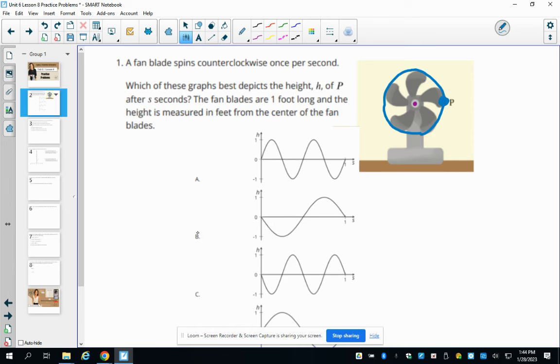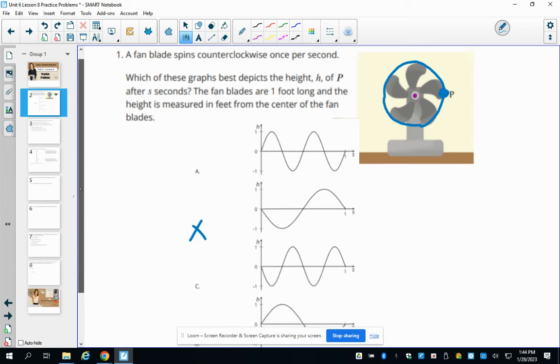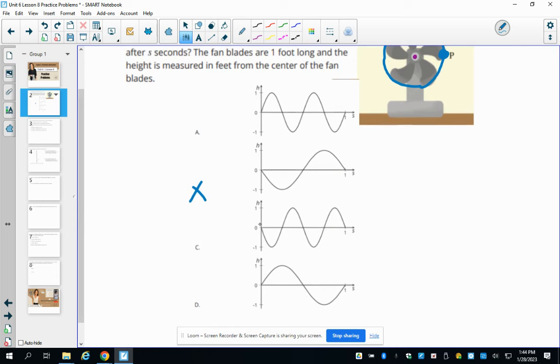This one is not. So B is not going to work because it goes down. C goes down. So that's not going to work. D goes up. And so we're looking at A and D. The reason it's going to be D is it gets to the highest point away once to the lowest point away once and then gets back to that one second. This one is getting through two full rotations in a second, where D is getting through one.